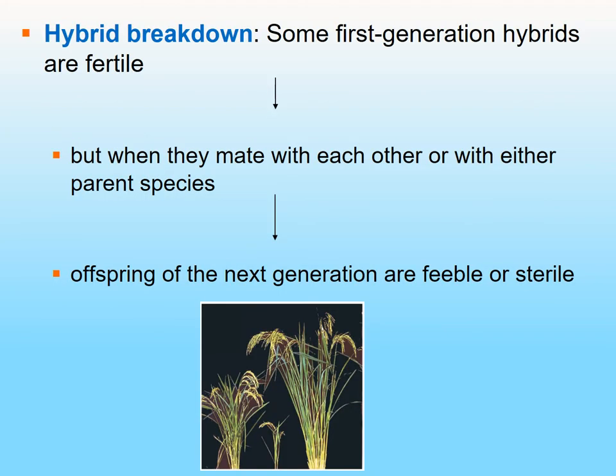Hybrid breakdown is an interesting situation. Here's an example using rice: two different species can interact and produce offspring initially, but over successive generations the hybrid starts to become less and less viable in the environment — more frail or feeble, and eventually sterile.